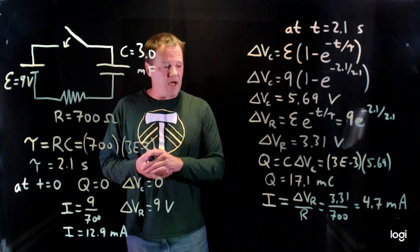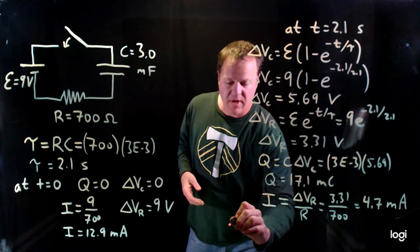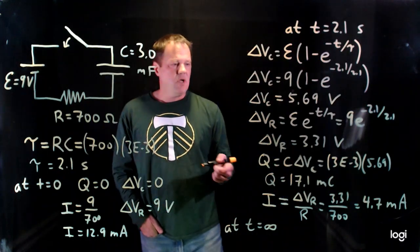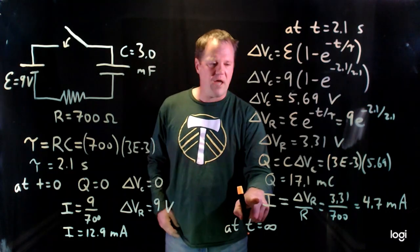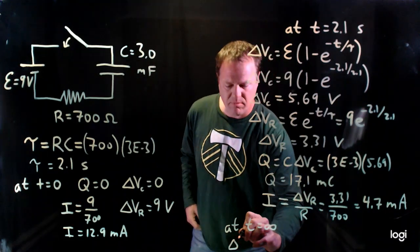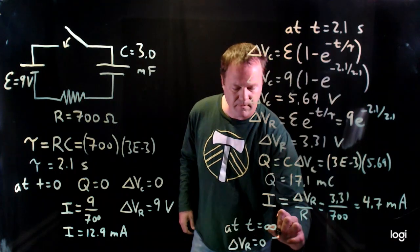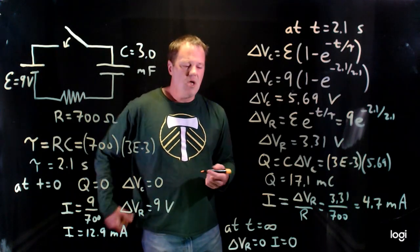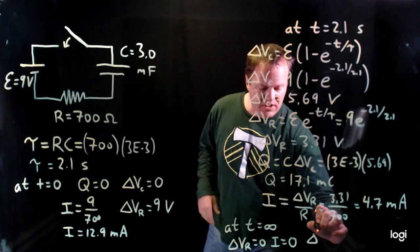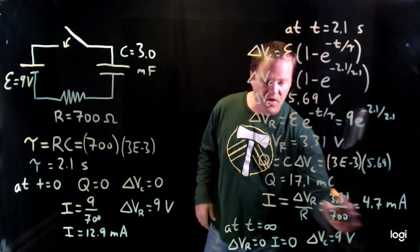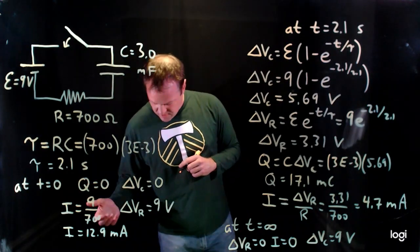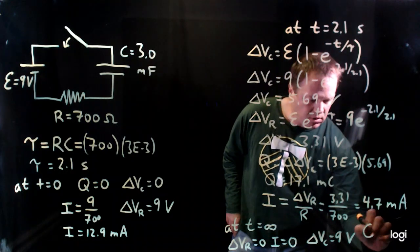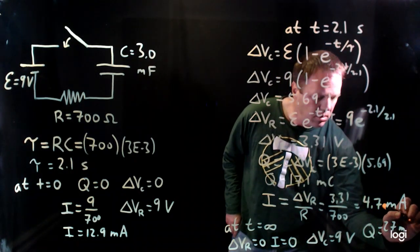We can also look at t = ∞, which we can simply assert. At t = ∞, the voltage across the resistor and the current would simply be zero — those are exponential decay functions that wind down to zero. The voltage across the capacitor we can assert is equal to 9 volts. Then using the definition of capacitance, the charge would be 27 millicoulombs.